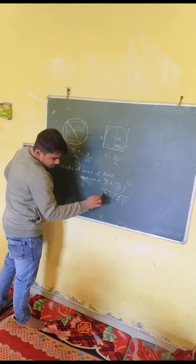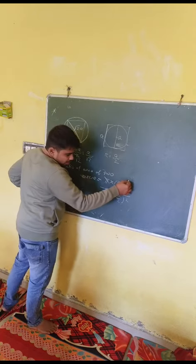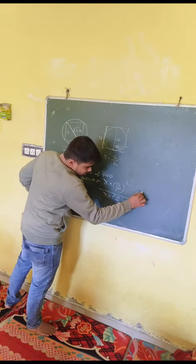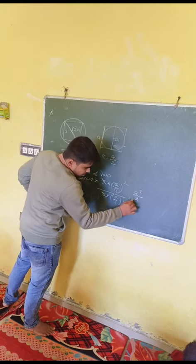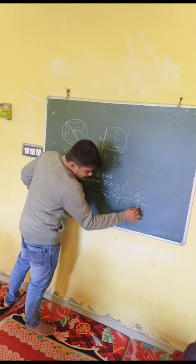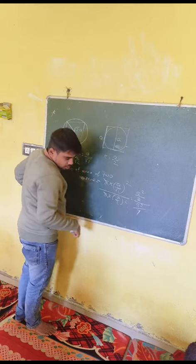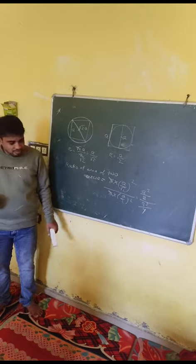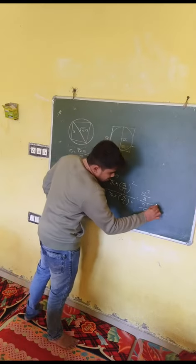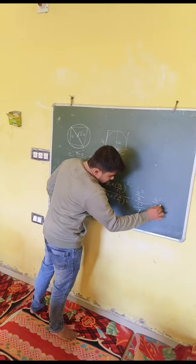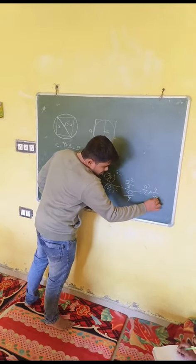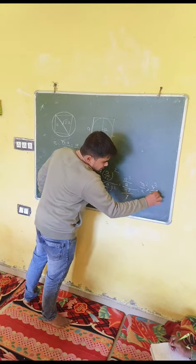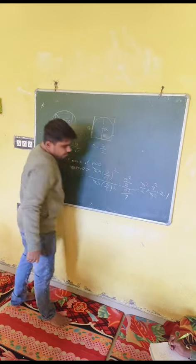Pi cancels. We have S squared over 4. Then 2 times root 2, root 2 into 2 is 4, so S squared divided by 2 into 4. S squared and square cancel, and 2 and 4 cancel, giving a ratio of 2 to 1.